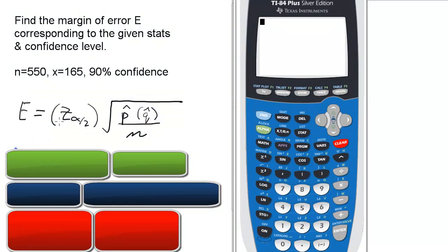So E, the margin of error, is Z alpha over 2, the critical value, times the square root of P hat times Q hat over N. We need to find each part out independently.